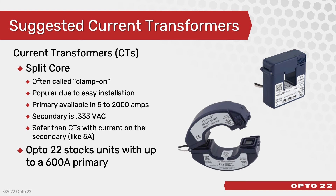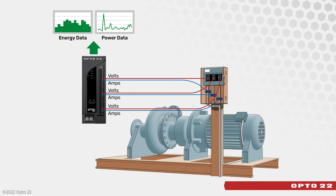Split-core CTs are typically available up to 2000 amps on the primary; Opto 22 stocks up to 600-amp units. The secondary output signal of these units is at 0.333 VAC, though some CTs have a 5-amp current secondary. In a typical installation, the RIO EMU connects to a three-phase load such as a pump and motor. You bring back the voltage tap and the CT outputs directly into the RIO EMU, and with very simple configuration, energy and power data is available.